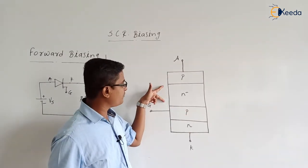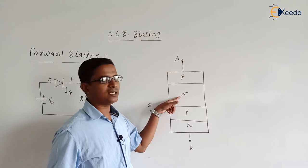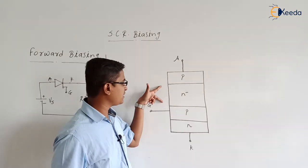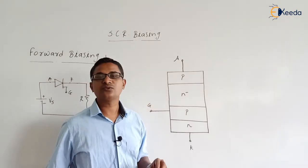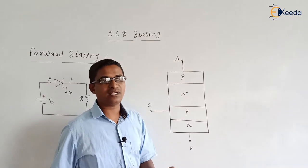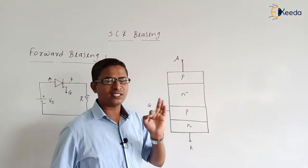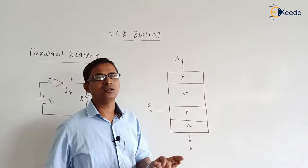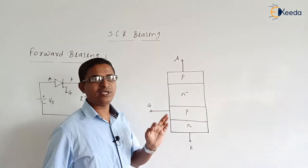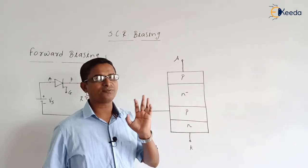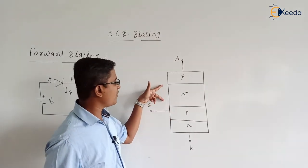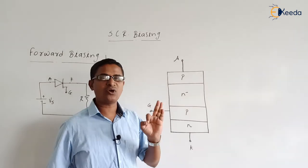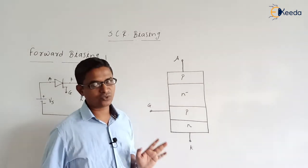The purpose of keeping the N-minus layer and increasing its width is that we are interested in making our SCR able to block higher voltages when it is in the off state. That is why we have added the N-minus layer — this point was already discussed in the last video.